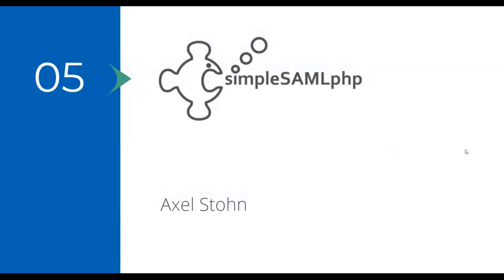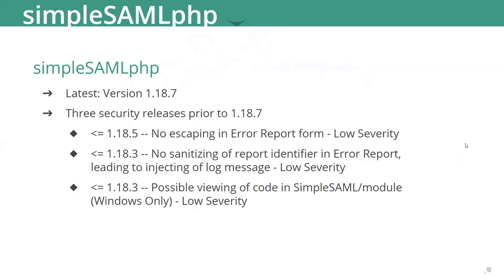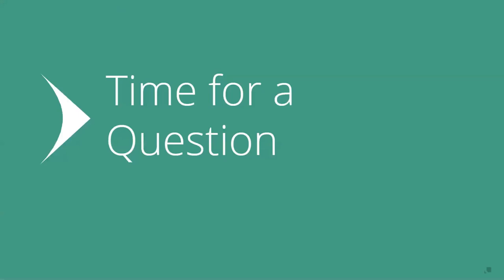On the SimpleSAMLphp front, there hasn't been a lot of activity. The latest version is 1.18.7. That encompasses three different security patches that were released in the timeframe, and they were very low severity. If you are on a lower version than 1.18.7, you may not really need to upgrade — it's really up to you. The patches deal with some escaping issues and error reporting around being able to inject into a log message. There's really no severity there associated with a user logging in through some sort of bug. That's pretty much it for SimpleSAMLphp.